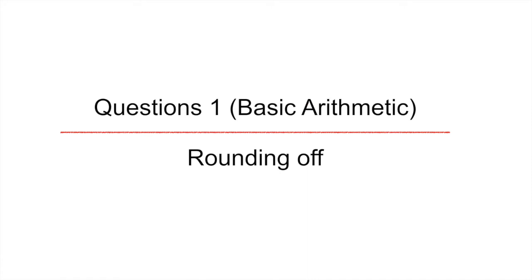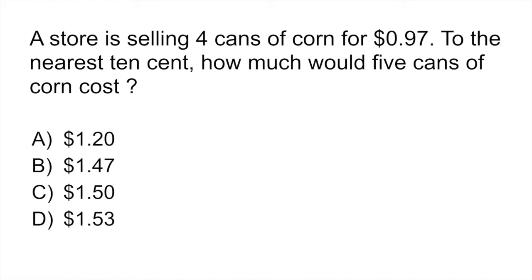Today's first basic arithmetic question involves rounding off. The store is selling four cans of corn for 97 cents. To the nearest 10 cent, how much would five cans of corn cost?